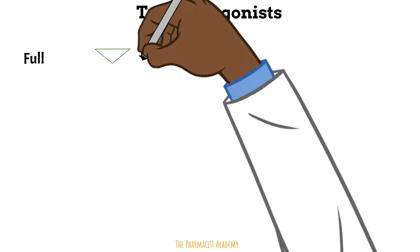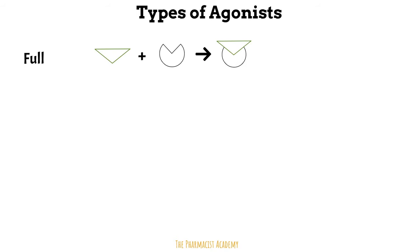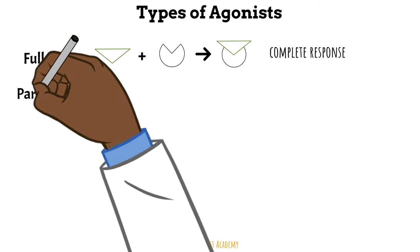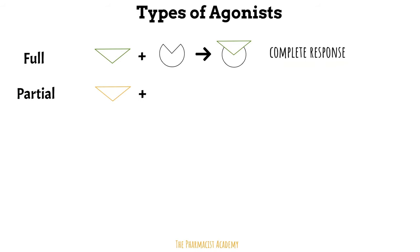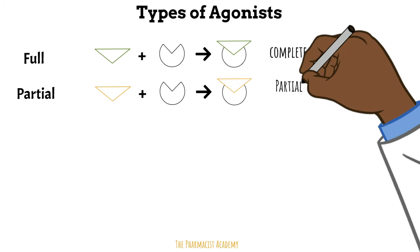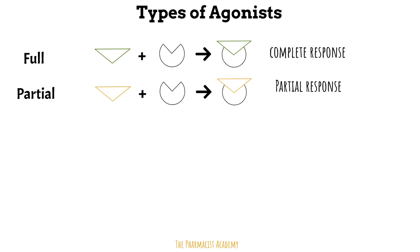Full agonists are drugs that bind to the receptor and lead to a full, complete response. Partial agonists are drugs that bind to the receptor but are unable to induce a maximal activation of the receptor — so it's only a partial response. They are useful for the treatment and avoidance of drug dependencies, as they induce a similar effect but are less potent and addictive. A good example is buprenorphine.